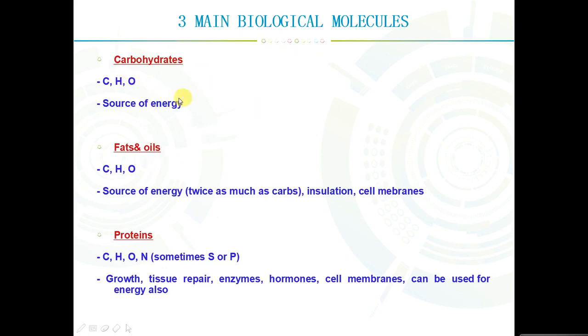We're going to begin by explaining the three main types of biological molecules. The first is carbohydrates, made of carbon, hydrogen and oxygen, mainly used as a source of energy. Fats and oils are also made of carbon, hydrogen and oxygen. As with carbohydrates, they're used as a source of energy. In fact, the energy you can obtain from a unit of fat is twice as much as what you can get from carbohydrates. But fats and oils are also used for insulation and cell membranes.